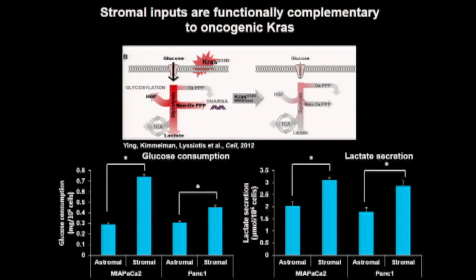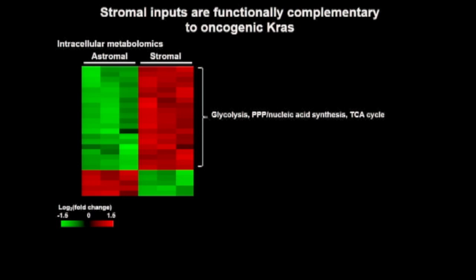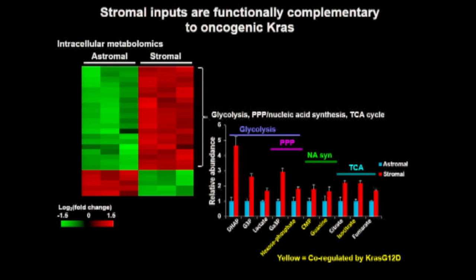To look at the steps in between, I collaborated with Alec Kimmelman to do intracellular metabolomics on human pancreatic cancer cells. The metabolomics data showed that in the context of stromal cues, pancreatic cancer cells undergo a significant increase in intracellular levels of metabolites involved in glycolysis, the pentose phosphate pathway, downstream components of nucleic acid synthesis, and metabolites in the TCA cycle. Stromal cues increase levels of metabolites in a number of RAS-regulated metabolic pathways, including specific RAS-regulated metabolites shown in yellow.